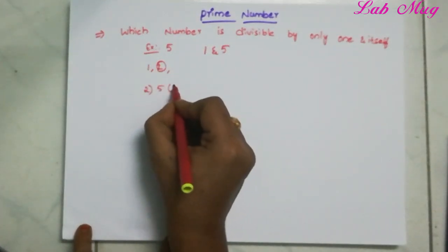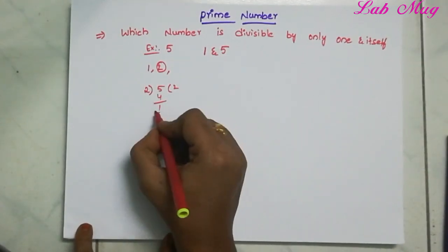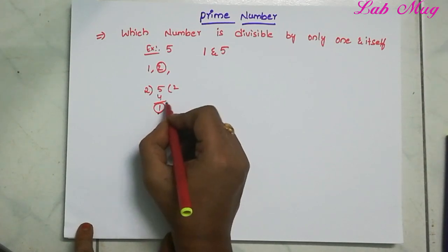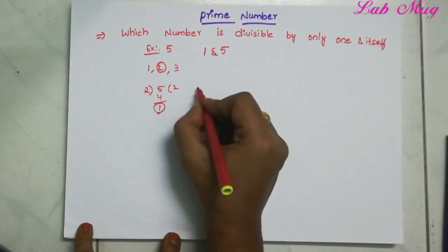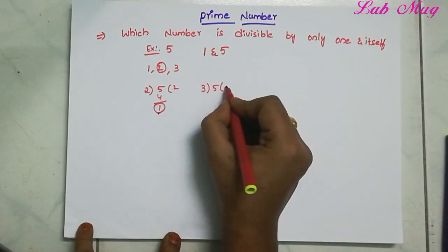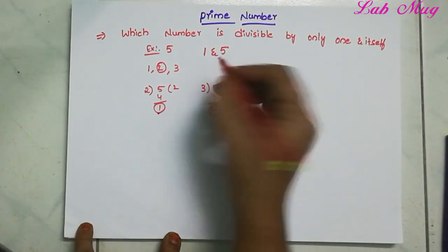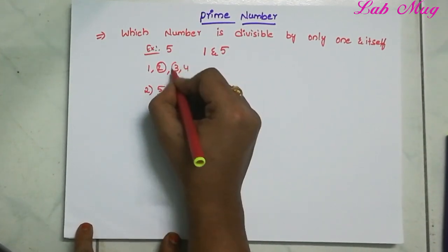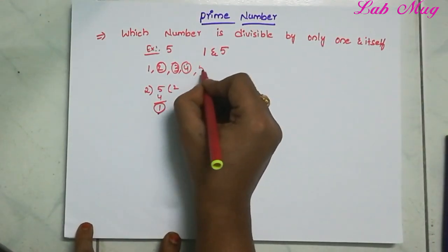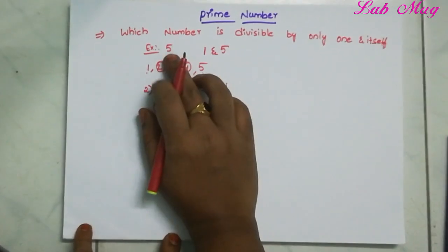Checking further: 5 divided by 2 gives remainder not 0, so 2 is not a factor. 5 divided by 3 — 3 is not a factor. 5 divided by 4 — 4 is not a factor. 5 divided by 5 gives remainder 0, so 5 is a factor. Therefore, 5 is a prime number.